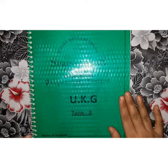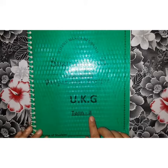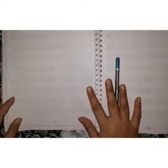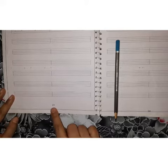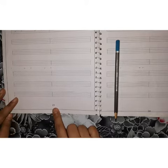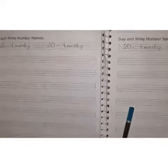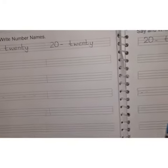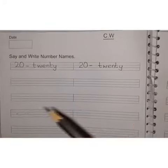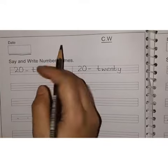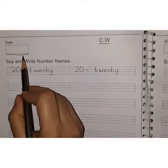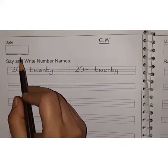Come on children, take out your term two number work spiral book. Open this book and take out page number 23. Write today's date here.